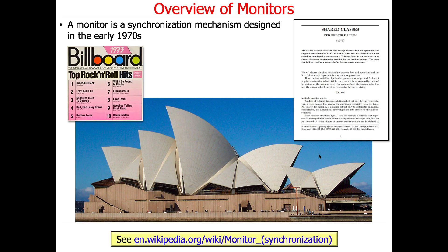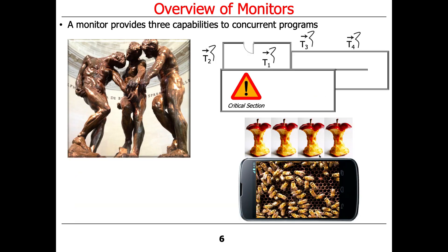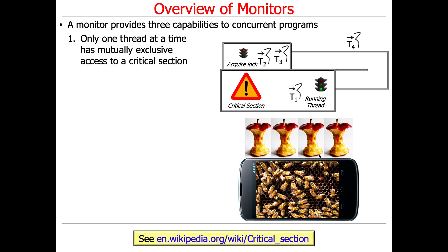A monitor is a synchronization mechanism that's been around for a very long time — originally devised in the early 1970s, pretty much the dawn of modern computing. It provides three primary capabilities to concurrent programs. Number one, it ensures that only one thread at a time can have mutually exclusive access to a critical section.